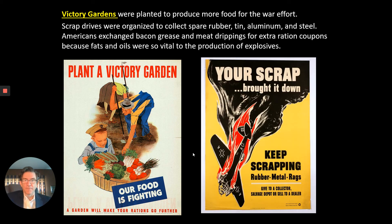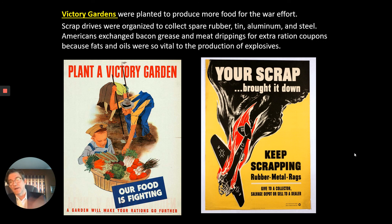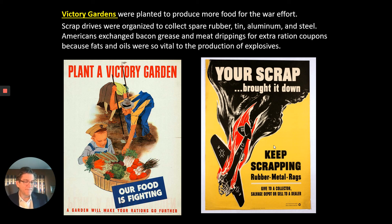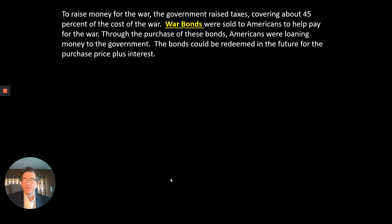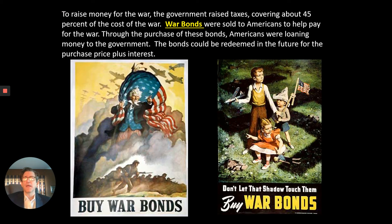Victory Gardens were planted to produce more food for the war effort. Scrap drives were organized to collect spare rubber, tin, aluminum, and steel. Americans exchanged bacon grease and meat drippings for extra ration coupons because fats and oils were vital to the production of explosives—you need something to bind all the gunpowder together, and bacon grease and meat drippings are great for that. People gave away their rubber, metal items, anything they could to help the war effort.